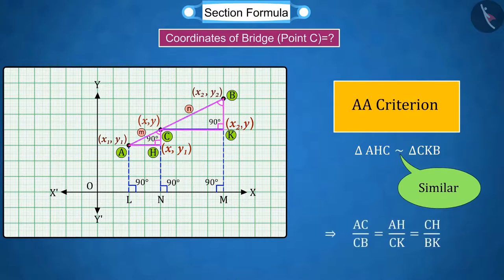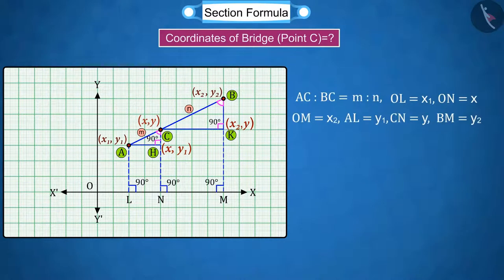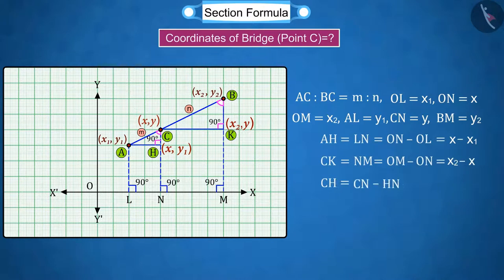Therefore, the ratio of their corresponding sides will also be equal, as shown by equation 1. With the help of the figure, we can see that AH equals X minus X1, CK equals X2 minus X, and CH equals Y minus Y1 and BK equals Y2 minus Y.